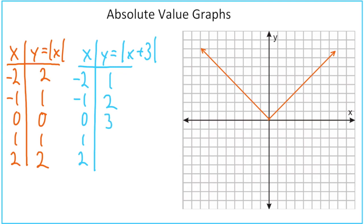This time we're going to add 3 again, but put the plus 3 inside the absolute value sign: y equals the absolute value of x plus 3. If we put negative 2 in for x, we get negative 2 plus 3, which is positive 1, and the absolute value of positive 1 is 1. Negative 1 plus 3 is 2, absolute value is 2. Zero plus 3 is 3, absolute value is 3. One plus 3 is 4, absolute value is 4. Two plus 3 is 5, absolute value is 5.